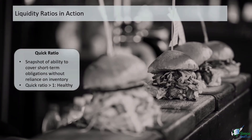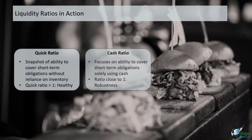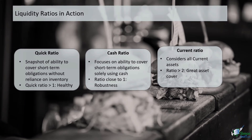The quick ratio provides a snapshot of Sandmart's ability to cover its short-term obligations without relying on inventory. A quick ratio above 1 suggests a healthy liquidity position. The cash ratio focuses solely on Sandmart's ability to cover short-term liabilities with available cash — a ratio close to 1 implies a robust ability to meet immediate obligations. The current ratio considers all current assets; a ratio above 2 indicates Sandmart has more than enough assets to cover short-term liabilities. These liquidity ratios give us insights into Sandmart's capacity to handle its immediate financial responsibilities.